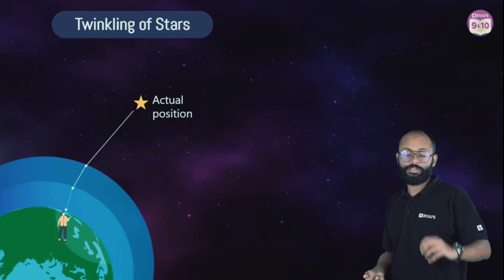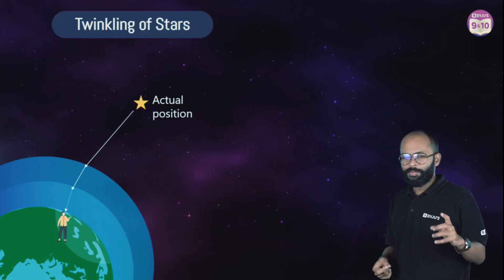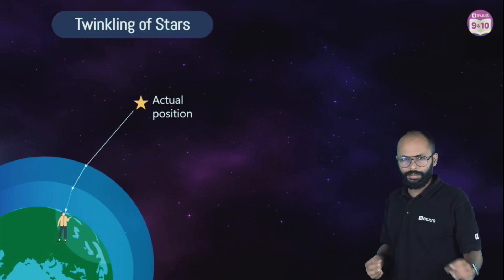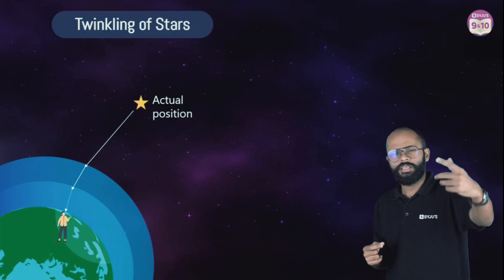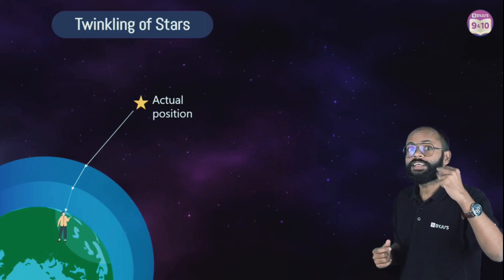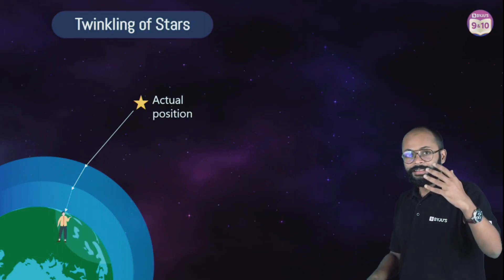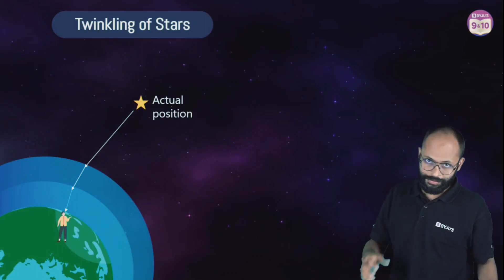But when the light reaches the surface or your eyes, what happens? It has already bent. But our eyes have a tendency, we always see, we always think that light has traveled in straight lines.